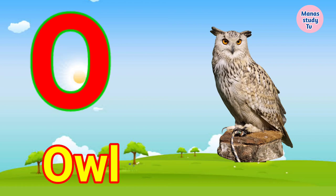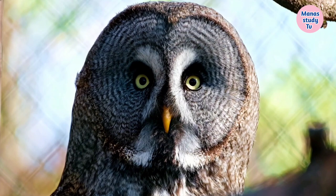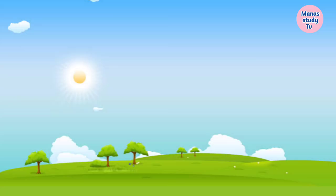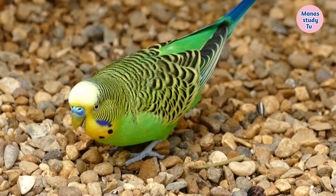O. O for Owl. Owl means Ullu. P. P for Parrot. Parrot means Tota.